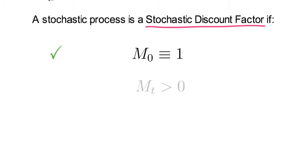Second, MT is larger than 0 for all T with probability 1. And third,